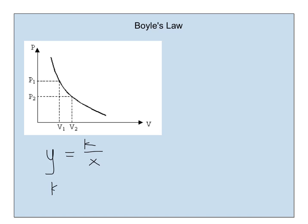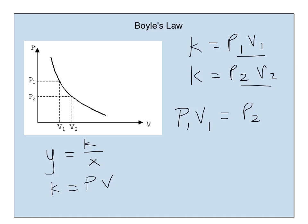I get the constant value equals the pressure times the volume. If I choose any two points on my graph, v1, p1, and v2, p2, I can substitute them into my equation. The constant value equals p1 times v1, and the constant value equals p2 times v2. Since these expressions here are equal to the same constant, they're also equal to one another. So p1 times v1 equals p2 times v2.